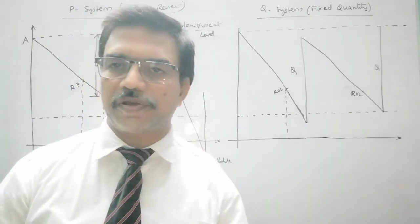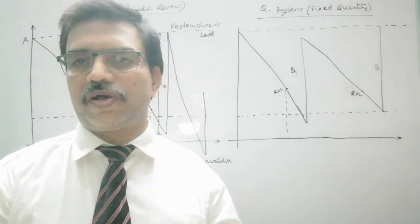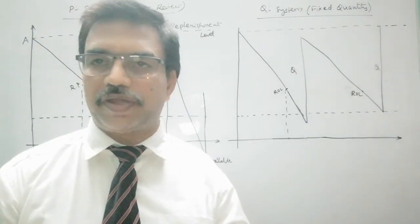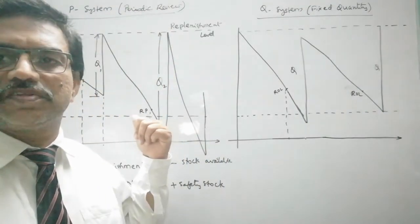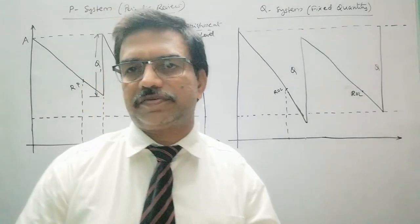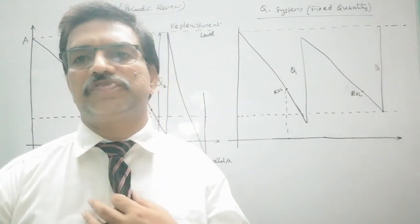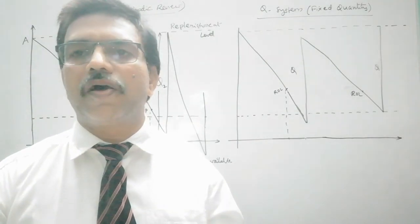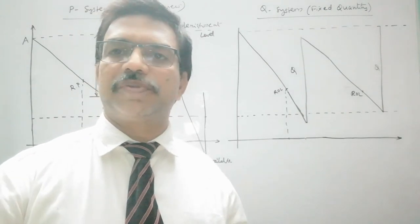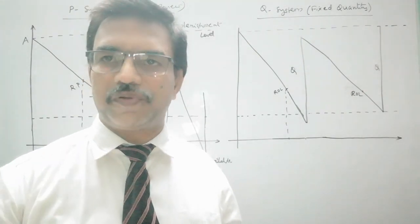So this is how we can use P system and Q system. Depending on the number of items and the carrying cost: we use Q system where the carrying cost is significant and high, whereas when carrying cost is low or insignificant we can go for P system. We have to select whether to go for a periodic review system or a fixed order quantity system based on these factors. Thank you very much; in some other video I will explain more interesting concepts in inventory control.